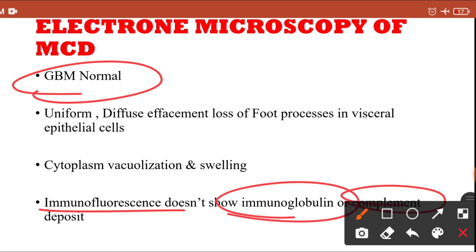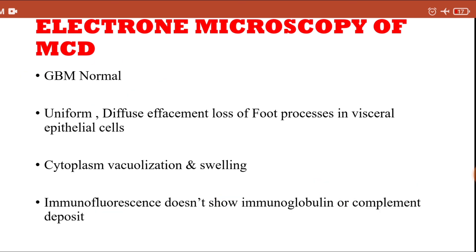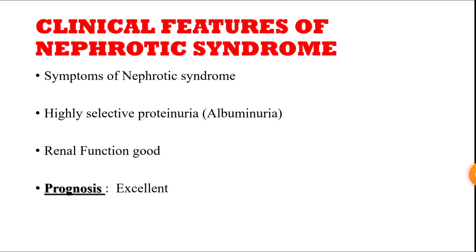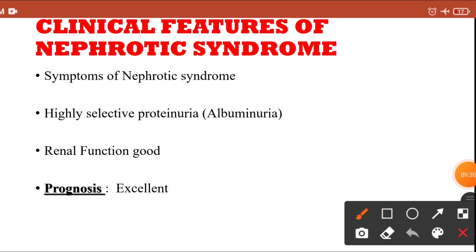On immunofluorescence microscopy, there are no immunoglobulin or complement deposits. In contrast to post-streptococcal glomerulonephritis or rapidly progressive glomerulonephritis where immunoglobulins and complements are deposited, in minimal change disease no such deposits are seen.